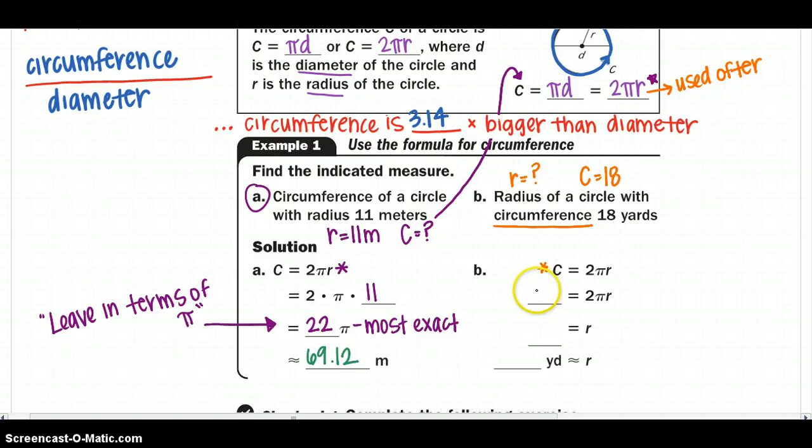We are going to fill it in, plug it in. 18 equals 2 pi r. And remember to solve, if I have 18 equals 2 pi r, I want to get r by itself so I can divide by 2 pi. Make sure you are plugging it into your calculator correctly. So your r is 18 over 2 pi.